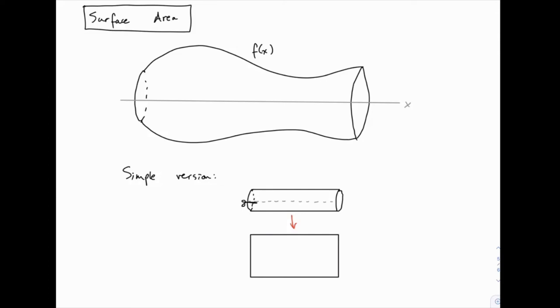The last geometric application we're going to see for integrals here is to find the surface area of an object. Specifically, we're going to look at objects like this one that are rotationally symmetric. These are the same kind of things we dealt with using disks and washers for volumes.